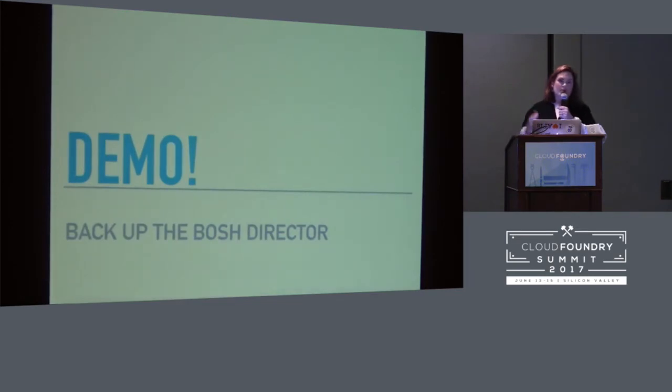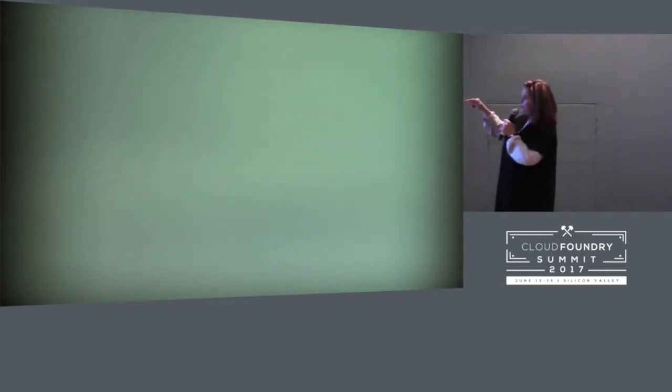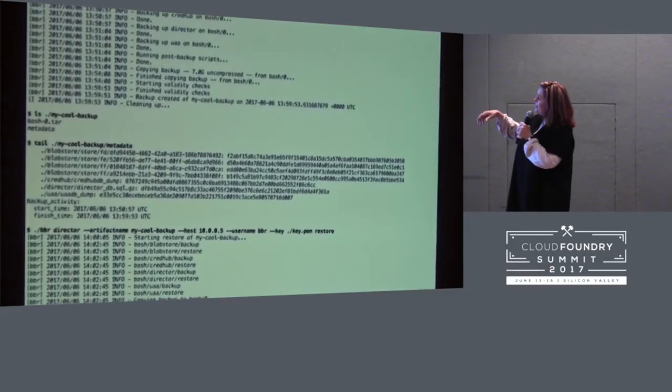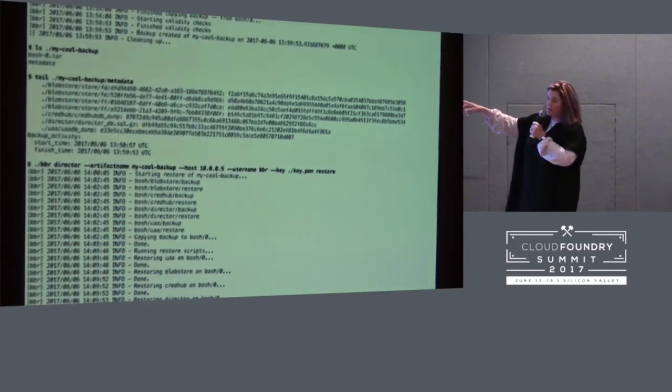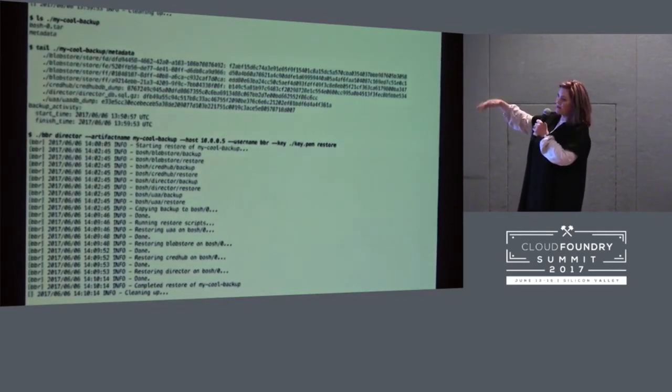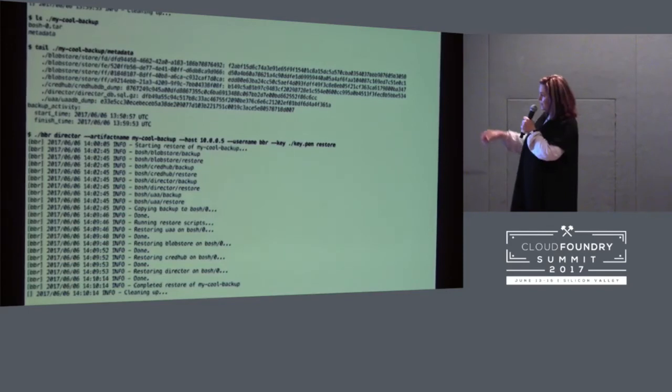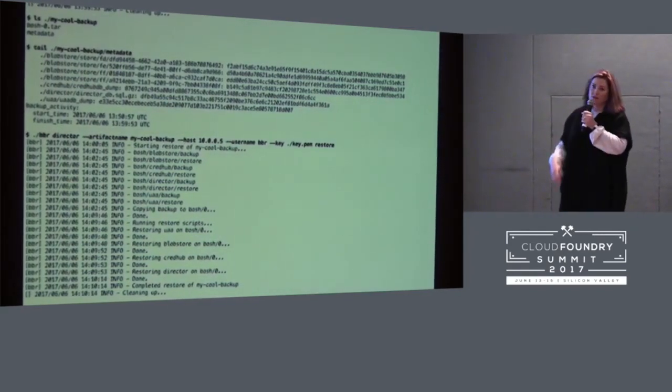Now I'm going to give you a demo. Me and live demos — not so good. So it's a video, it's sped up, but it is the real thing. We're backing up the BOSH director here. You can see it identifies which scripts are there. It's backing up CredHub, the director, the director database, the blob store, and UAA. Then it does checksums and validity checks, and creates a tar file. It also creates a metadata file which has each of the artifacts it created, and also the start and finish time of the backup. And then you can see that we ran restore and put all that data back into BOSH.